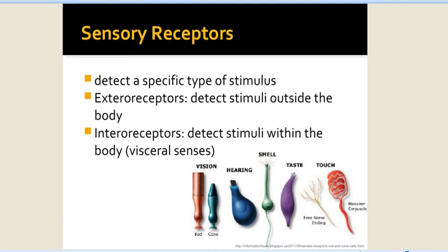The sensory receptors detect specific types of stimuli. Exteroceptors detect stimuli outside the body, and internal receptors detect stimuli within the body, present in the viscera. The special receptors are for vision, hearing, smell, taste, and touch.